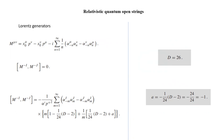If the continuous symmetry is in time, then the generator of that symmetry is the Hamiltonian, and the conserved charge there is the energy. If you have a continuous symmetry in space, then the conserved charge there is the momentum.